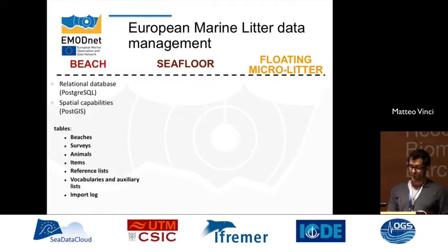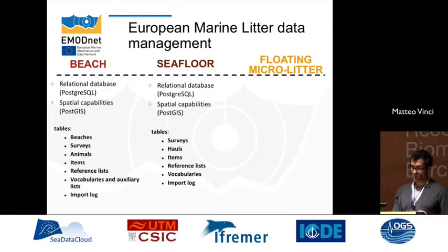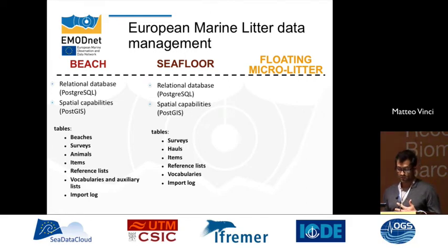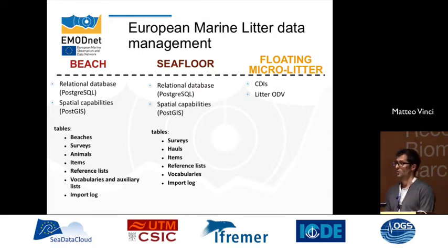For beach data we created and populated a relational PostgreSQL database with PostGIS spatial capabilities, with tables describing beaches, surveys, animals, items, reference lists, vocabularies, auxiliary lists, and import logs. For sea floor we built another PostgreSQL/PostGIS relational database with tables for surveys, hauls, items, reference lists, vocabularies, and import logs. For floating micro litter we use the SeaDataNet infrastructure, managing metadata via CDIs and data via the adapted litter ODV format.